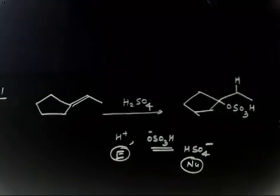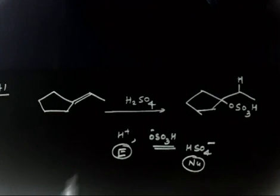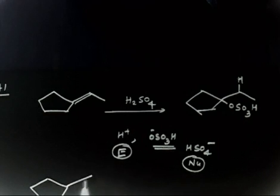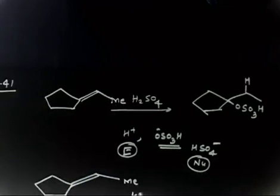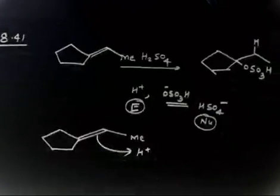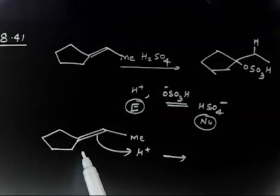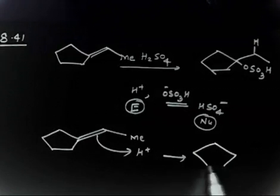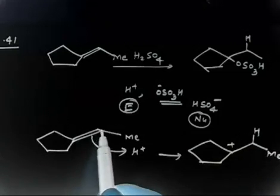Now we have to write down the mechanism. The first step is H⁺ attack. If H⁺ attacks the alkene — let us say we have CH₃ here, let us call it Me — now can I generate a carbocation here or here? This carbocation is tertiary, so it will be more stable. So we generate the tertiary carbocation.